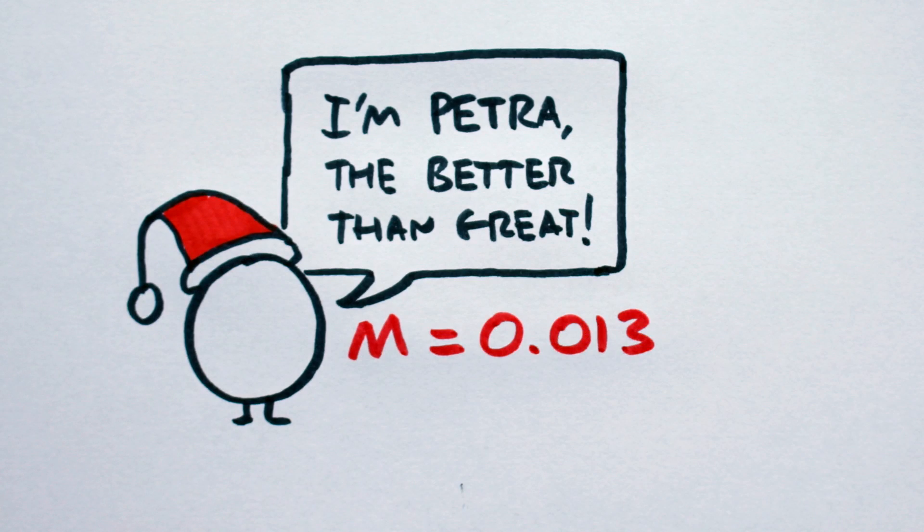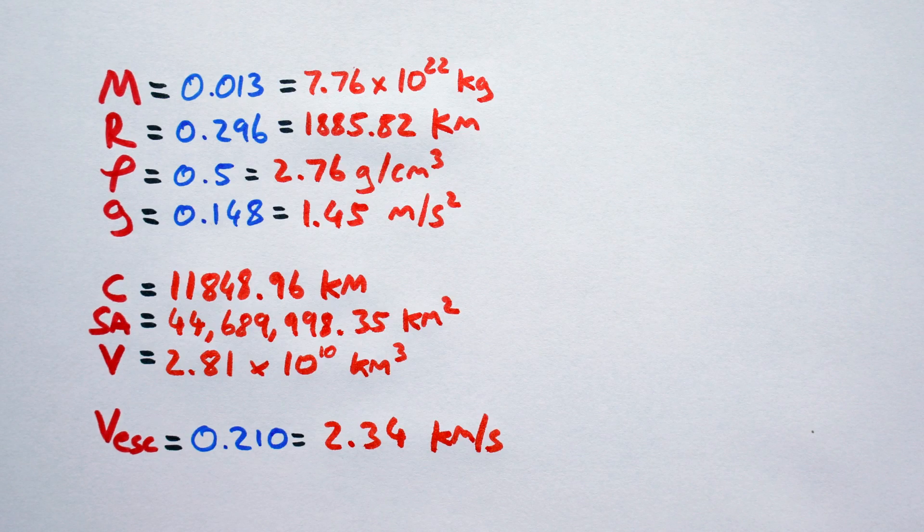Let's go with something a little more massive, say 0.013 Earth masses. Similarly, let's choose a higher density of, say, 0.5. One intense abacus session later, and we see that Petra is a dwarf planet with the following stats.